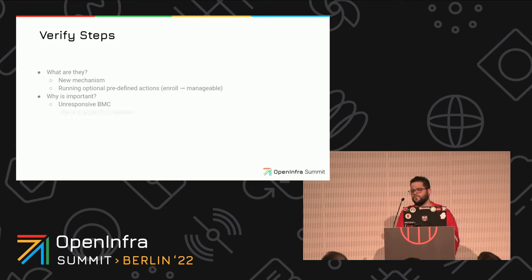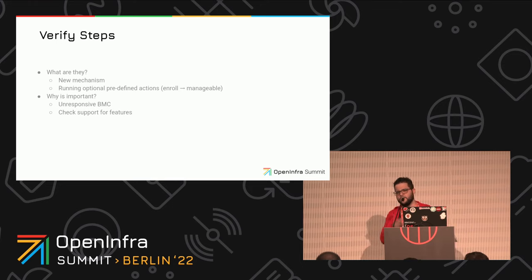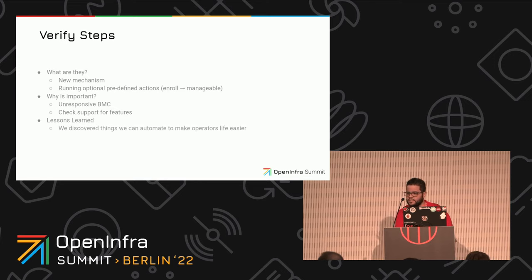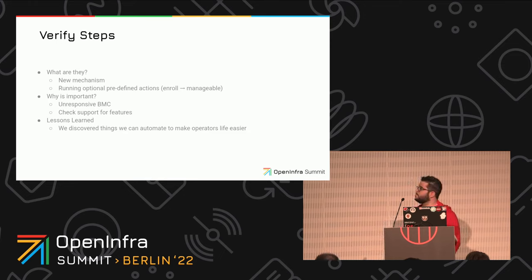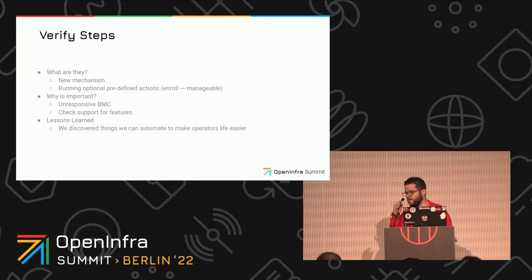Maybe in the future, a few things that can come up: checking for support for certain features, for example virtual media support. Some hardware has it, some others don't. So maybe someone will create a verify step that checks for virtual media support before you try to deploy a node — so you won't go through the deployment and only see a failure there. The lessons we learned: we will be helping operators automate challenges related to unresponsive BMCs, making their life easier, especially in the Kubernetes context where you really don't have an operator looking at the hardware — it's just the Kubernetes operator taking care of everything.